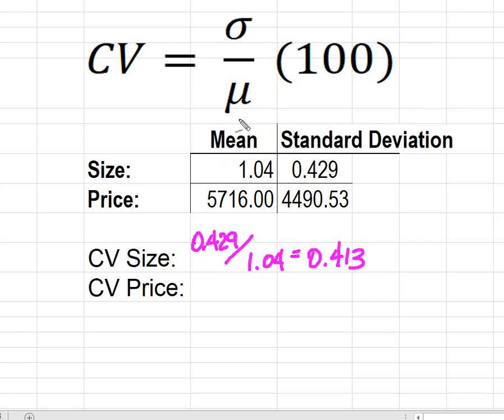Next, I'm going to look at price. Standard deviation divided by mean. So for price, standard deviation was 4490.53 and I have to express that relative to the mean, which was 5716.0. When I do that piece of math, I get 0.786.